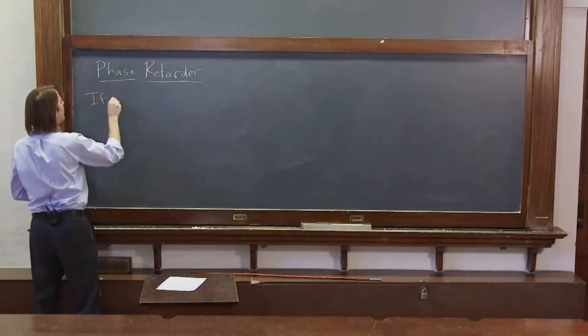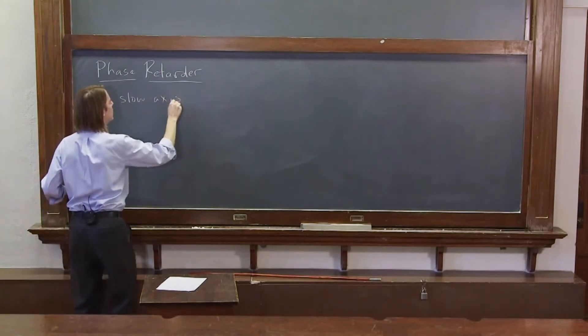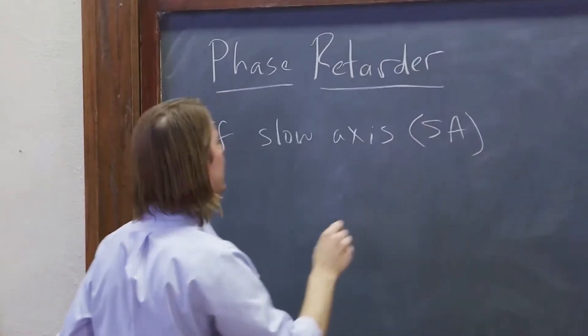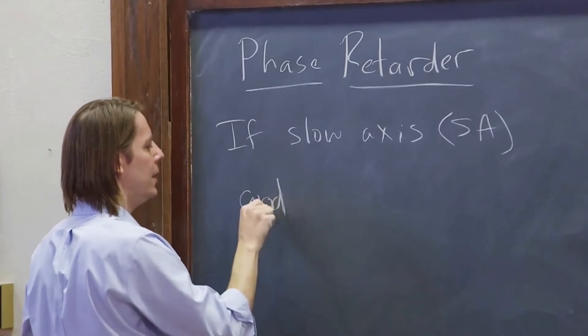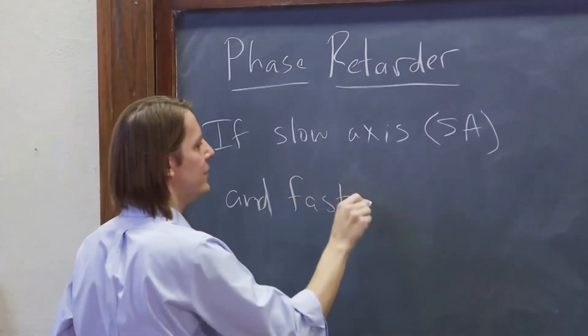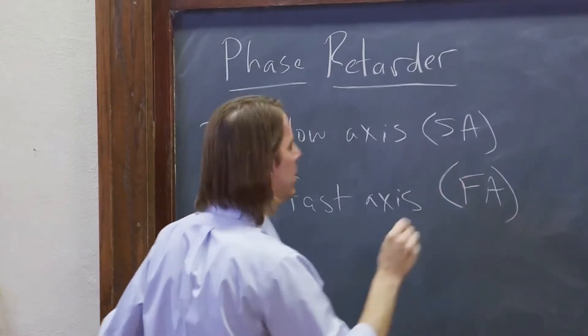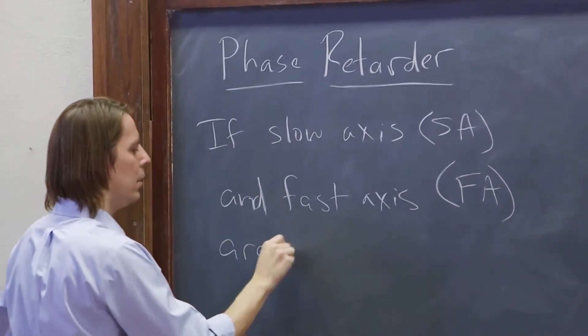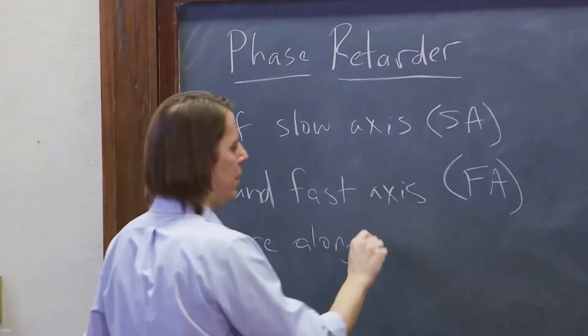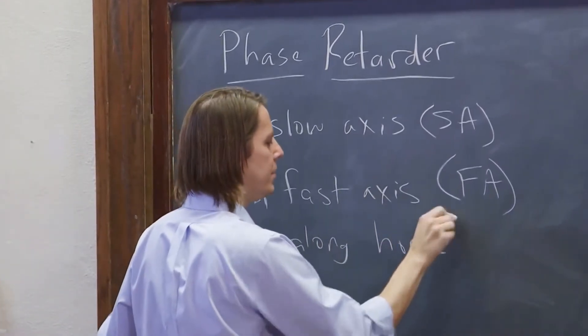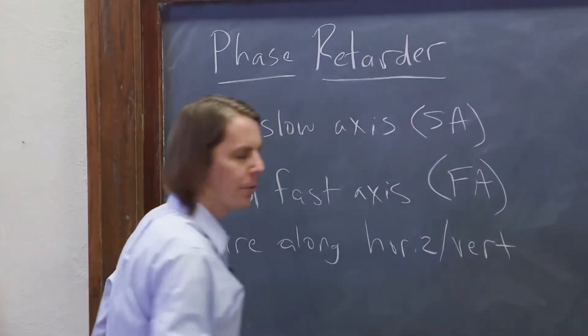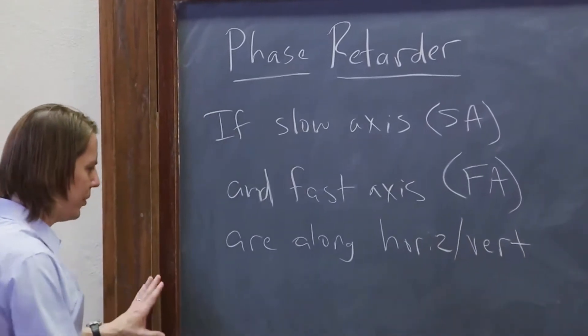So if the slow axis, which we label SA, and the fast axis, which we label FA, are along the horizontal and vertical direction, and for a device, you always put them along the horizontal and vertical,